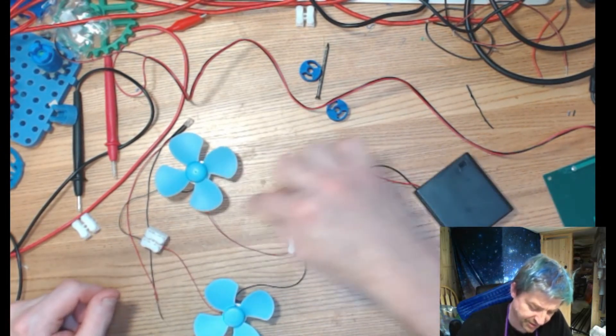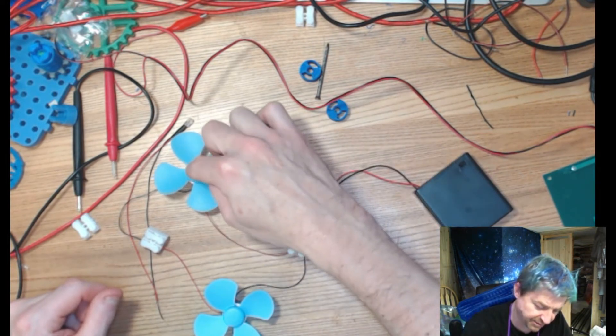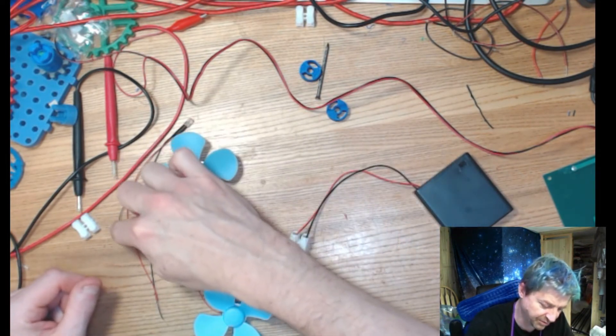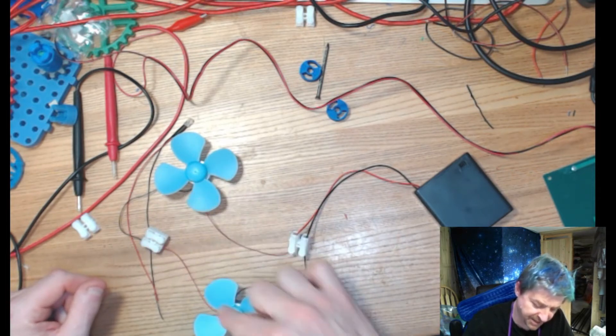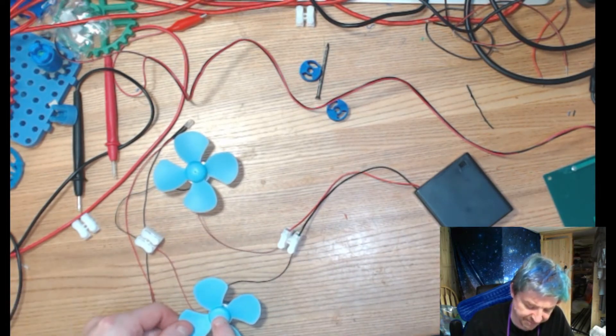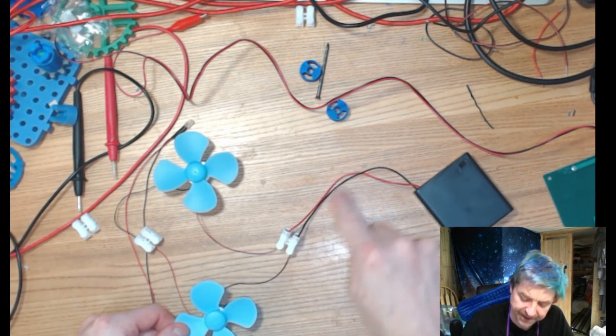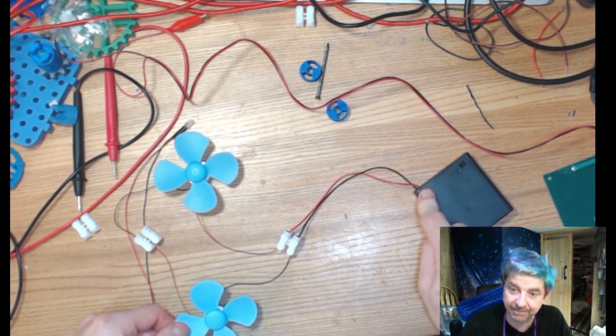it's going to flow through fan number one, flow through my black, and then from that wire into the positive side of my fan, and it's going to flow back in and go back into my battery. So again,